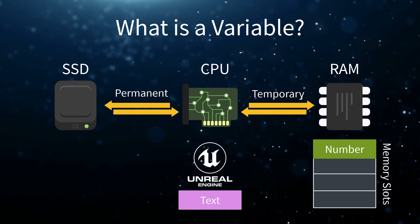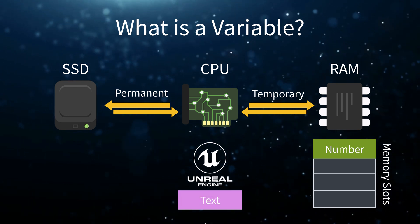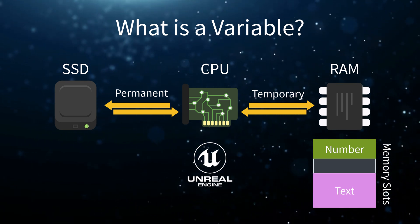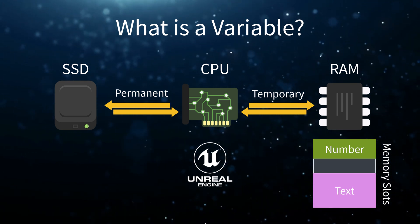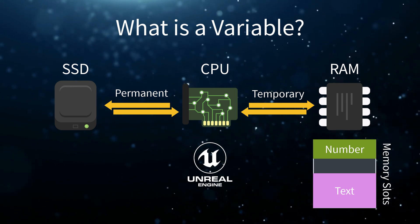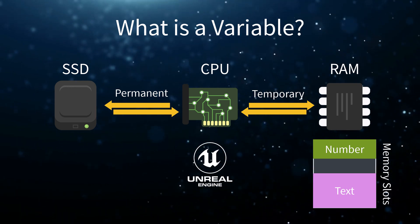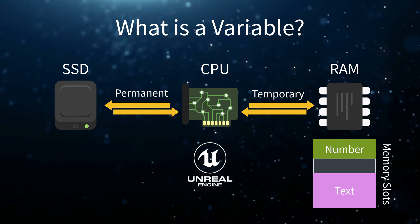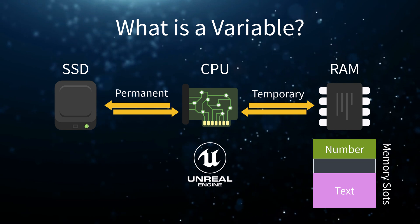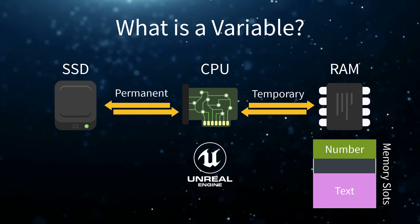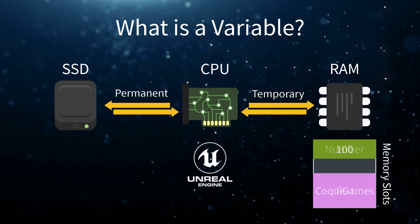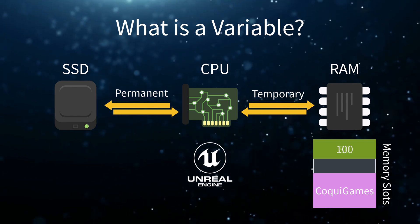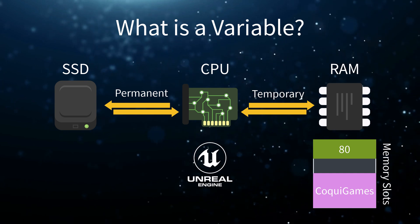However, if we wanted to store text, Unreal would need to allocate more memory for such a value. This is where the concept of a variable comes in. A variable is a data container that reserves space in memory for a specific type of value. It's called a variable because the actual value within the container can vary or change during gameplay. However, the type will never change.